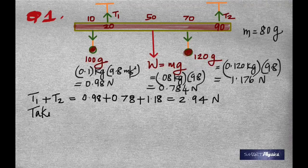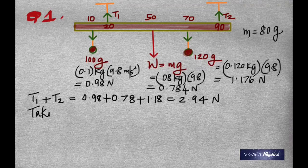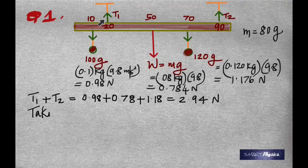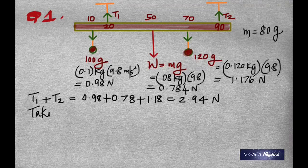The second condition for equilibrium is that the net torque about any point must be zero — the total counterclockwise torque equals the total clockwise torque. I've decided to take the torque about the 20 centimeter point, because then automatically the torque due to T1 is zero, since torque is the product of force and the perpendicular distance from the force to the pivot point, and T1 acts right at 20 centimeters.